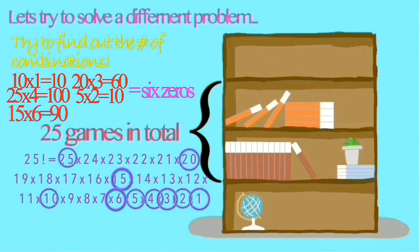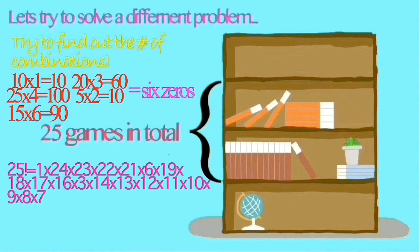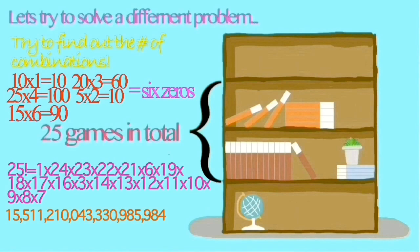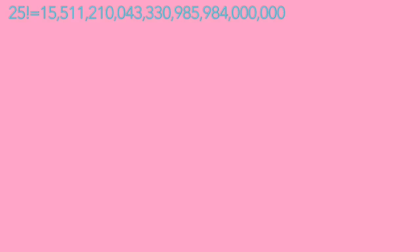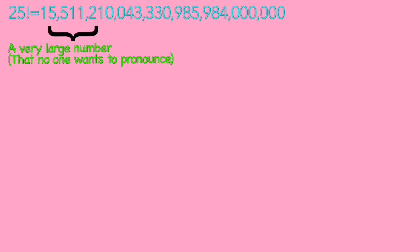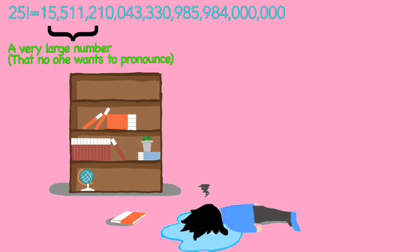Now, afterwards, you can multiply the rest of the remaining numbers. Once you do that, you can add the 6 zeros back in, which results in an extremely large number. Maybe picking the right combination of video games wasn't such a great idea.